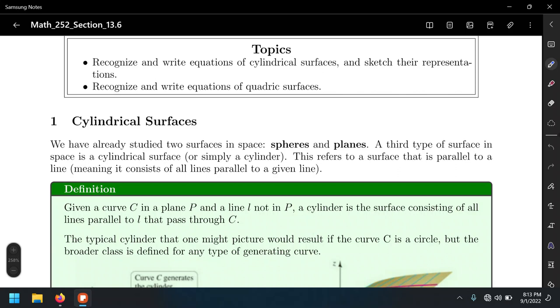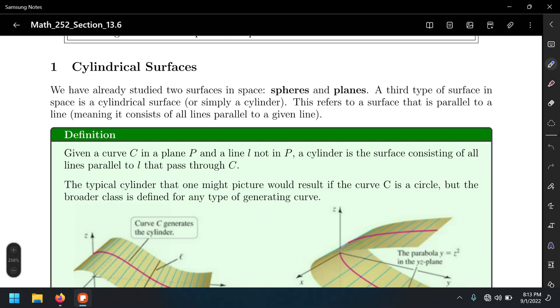Like a solid whose base has a circular shape and just extends vertically, right? Well, it turns out that when it comes to graphing these kinds of cylindrical surfaces, besides the other surfaces in space that we already know how to graph, which is spheres and planes, these third types are called cylindrical surfaces or simply cylinders.